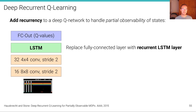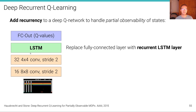Another idea is adding recurrency to a deep Q-network to handle partial observability of states. Since the input is only a set of images and may not fully reveal the state, a recurrent network — for example an LSTM — can replace the fully connected layer to potentially memorize state observations from earlier in the sequence.